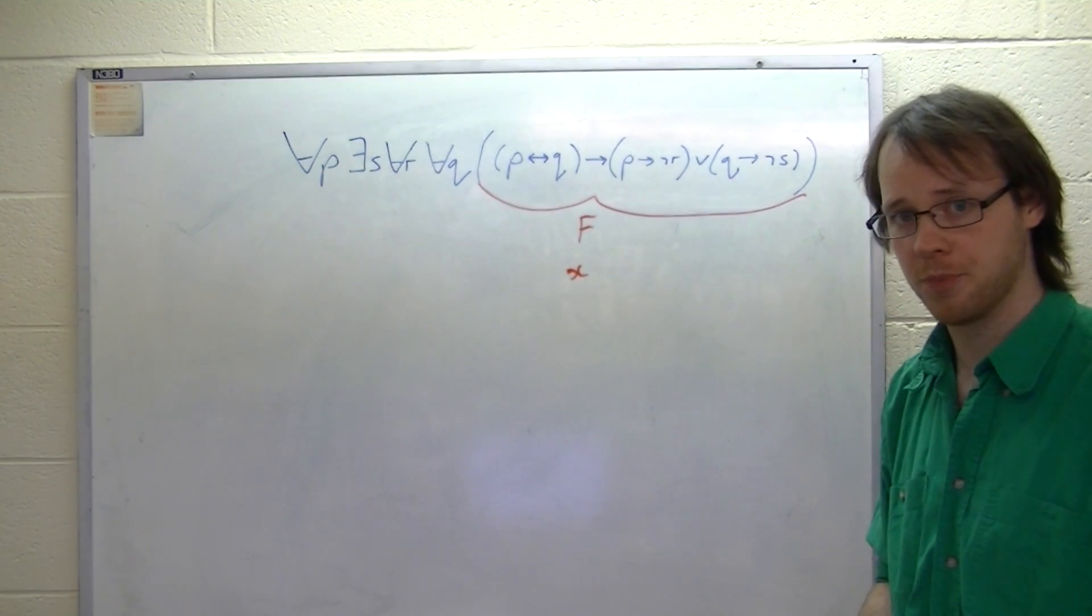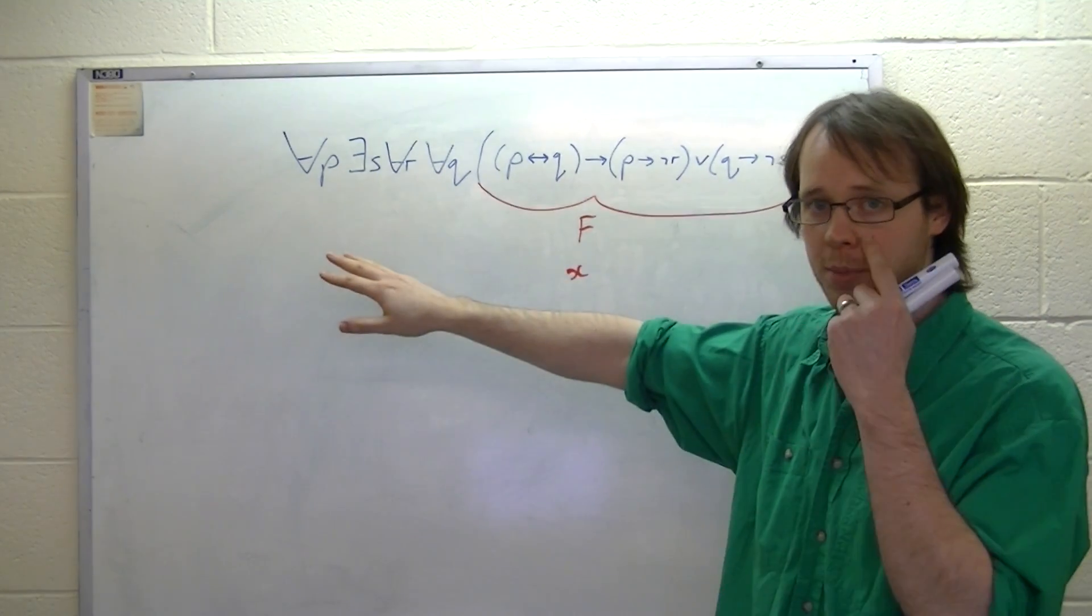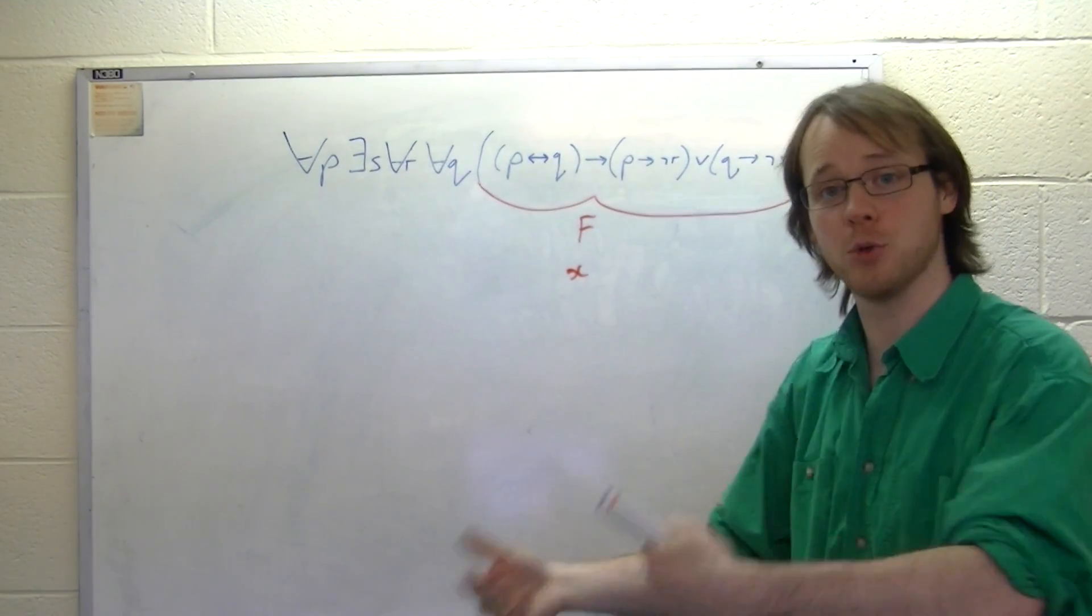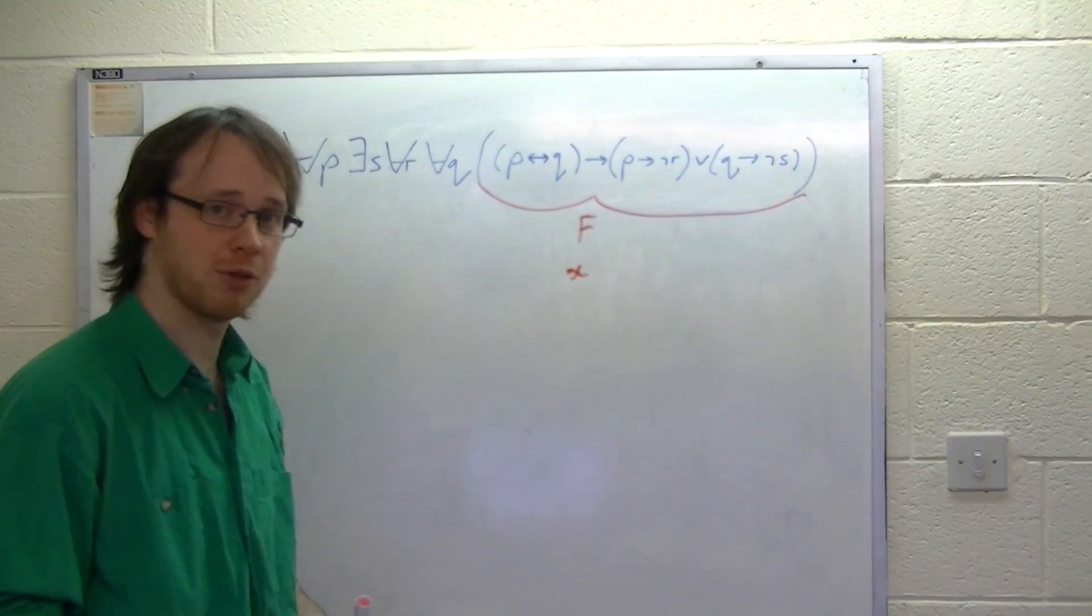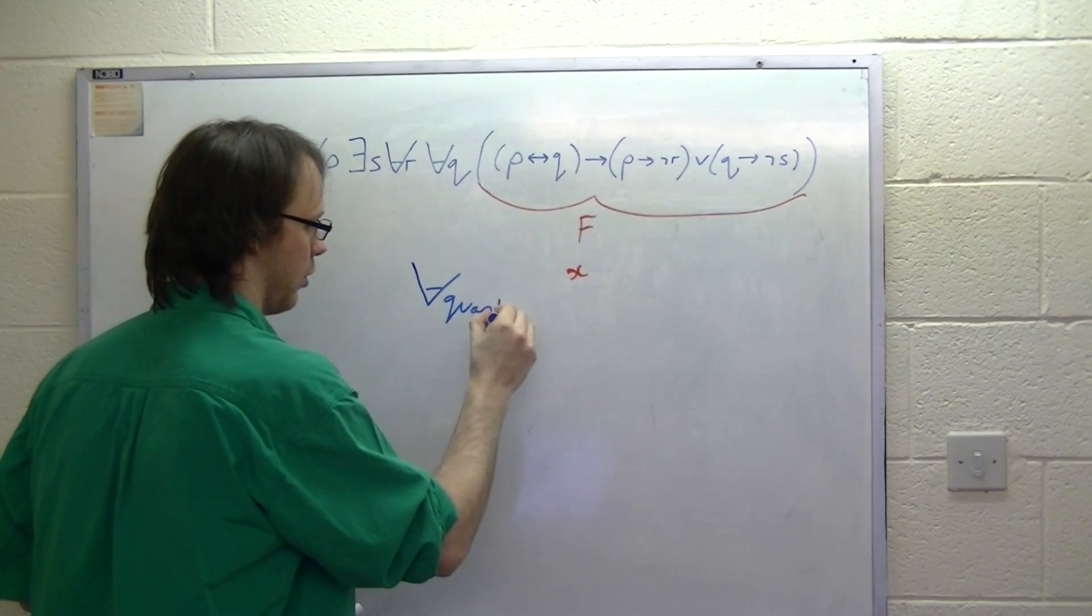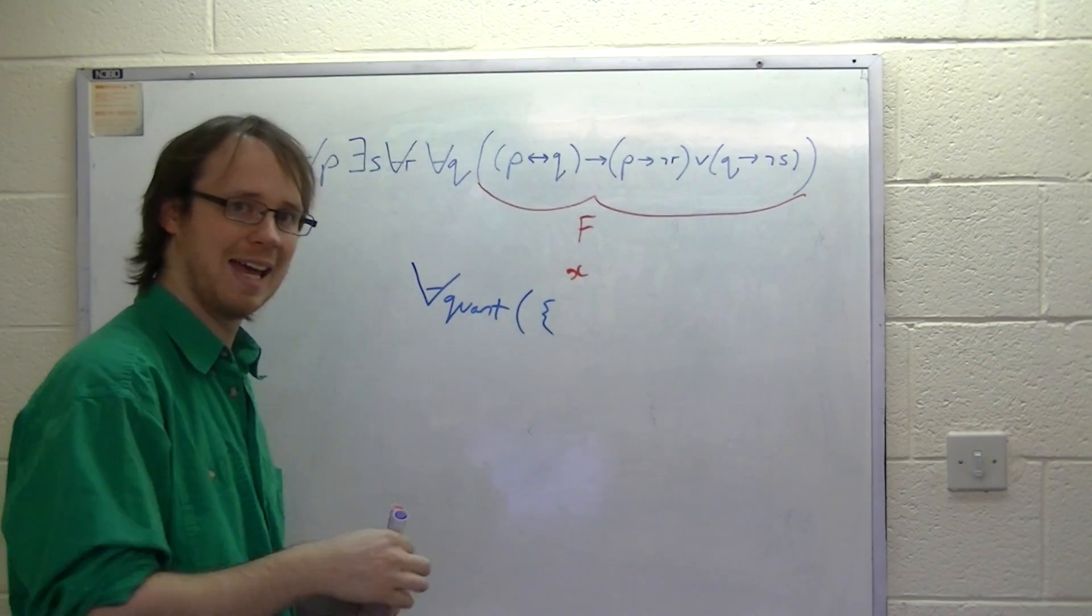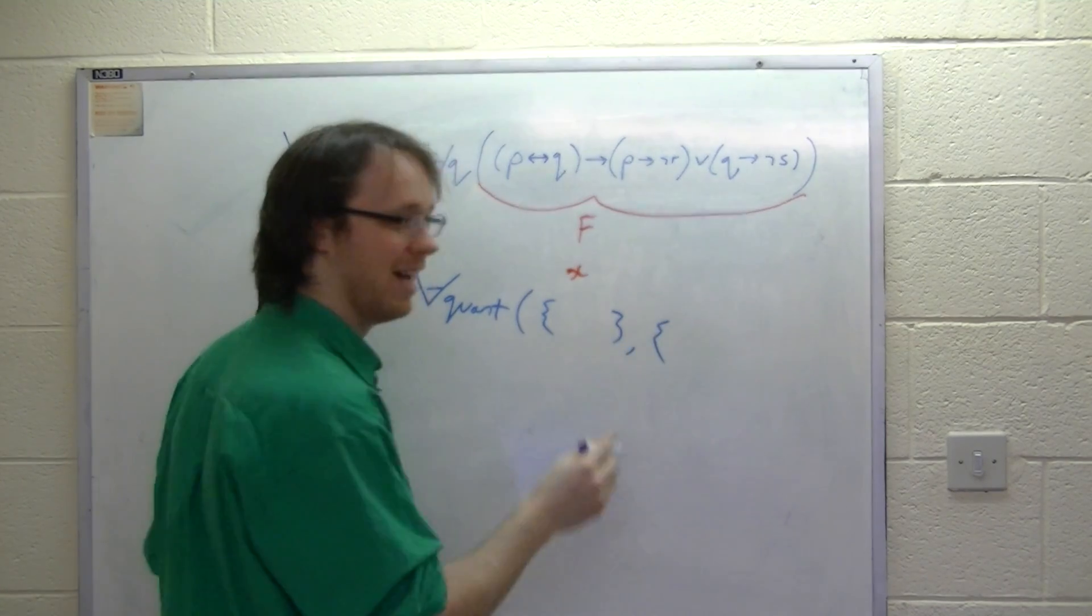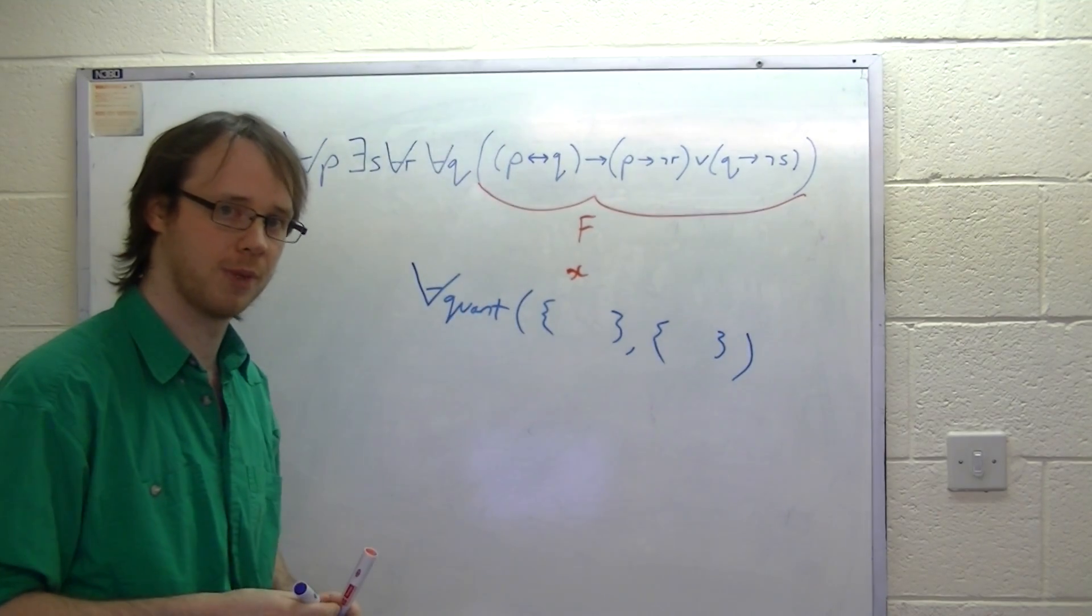What we do know how to do is how to take a list of quantified variables, either universal or existential, and a node which represents a formula, and create a new node which represents these things. So, we've got the for-all quant algorithm, and that can take a list of quantified variables of the for-all variety, and a set of nodes, and produce a new node.